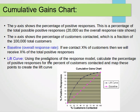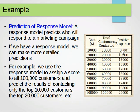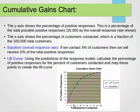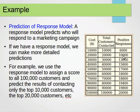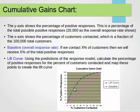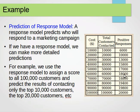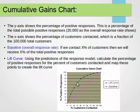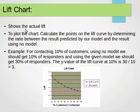For the lift curve, using the predictions of the response model, we calculate the percentage of positive responses for the percentage of customers contacted and map these points to create a lift curve. For the top 10% we have 6,000 responses: 6,000 over 20,000 is 30%. For the top 20% we have 10,000 responses: 10,000 over 20,000 is 50%. For the top 30% we have 13,000 responses: 13,000 over 20,000 is between 60 and 70%.